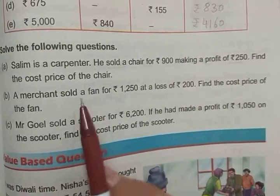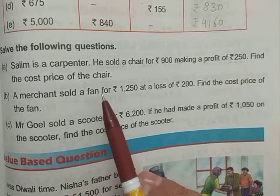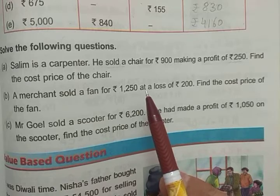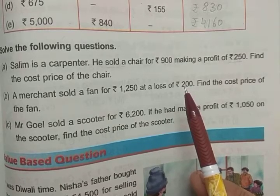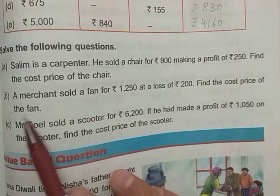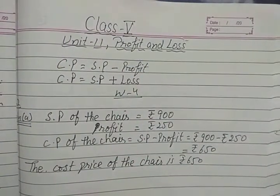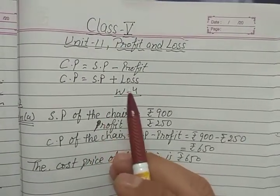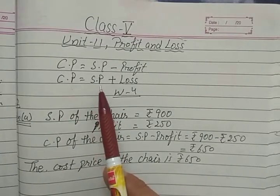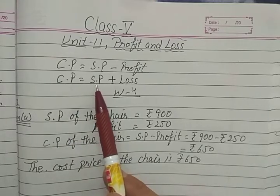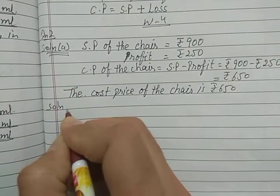Next question, part B: A merchant sold a fan for rupees 1250 at a loss of rupees 200. Loss is given. Find the cost price of the fan. This is again a direct question. The loss is given and selling price is given, so we have to find the cost price. In this case we add: cost price equals selling price plus loss.